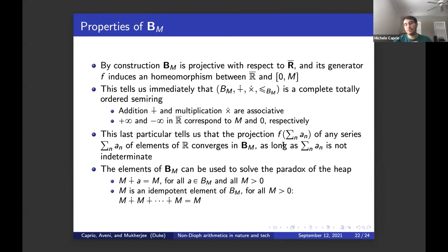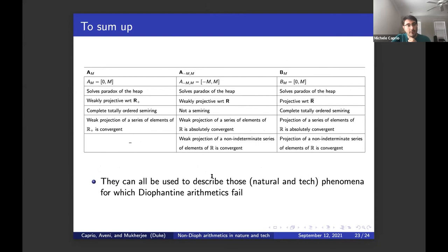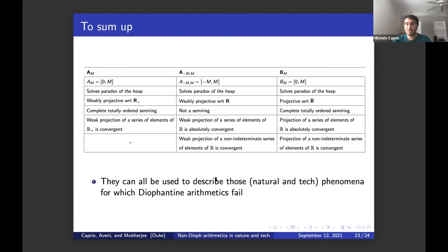And also the elements of B_M can be used to solve the paradox of the heap because of course, M dot plus A is equal to M for all A in B_M. And also M is an idempotent element of B_M as was M for both A_M and A_{-M,M}. So to sum up, I have this table where every property of the classes I presented are summed up. And of course they all can be used to describe those natural and tech phenomena for which the Diophantine arithmetics fail. I'm very happy to take any questions about this and thank you very much for your attention.